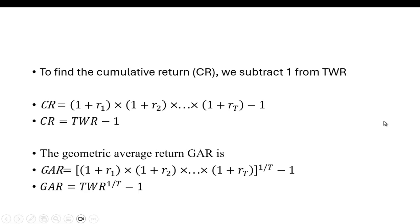To find the cumulative return, we simply subtract 1 from the terminal wealth ratio. So the cumulative return is (1 + r₁) times (1 + r₂) all the way out to (1 + rₜ) and we just subtract 1 from it, or we just take the terminal wealth ratio and subtract one.